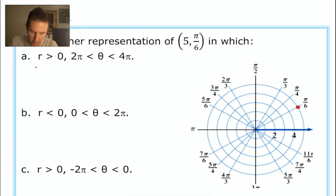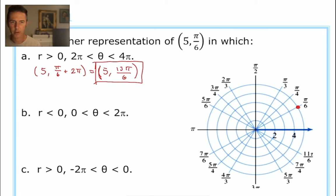So now we still want to use an r value that's greater than 0. I'm going to take the initial amount of rotation, pi over 6, and I'm going to add an entire rotation to it, so that I'm still aiming in the direction of pi over 6. So I'm going to say that this point can be written as 5 comma pi over 6 plus 2 pi, which is equivalent to 5 comma 13 pi over 6. So I would be willing to type that in as a final answer while I was doing my online homework.